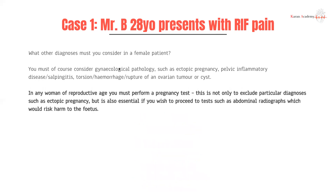If this patient were female, you should always consider gynecological pathologies: ectopic pregnancy, PID, salpingitis, and ovarian pathology such as torsion, hemorrhage, or ruptured cysts. In any female of reproductive age, always perform a pregnancy test — not just to exclude ectopic pregnancy, but also because if they were pregnant and didn't know, you wouldn't want to expose the fetus to high levels of radiation through CT, especially in early development.